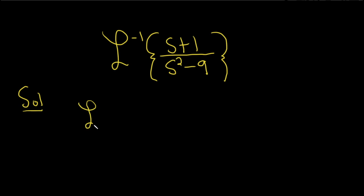So we have the inverse Laplace of s over this piece here, s over s squared minus 9, and then plus the inverse Laplace of 1 over s squared minus 9, just like that.